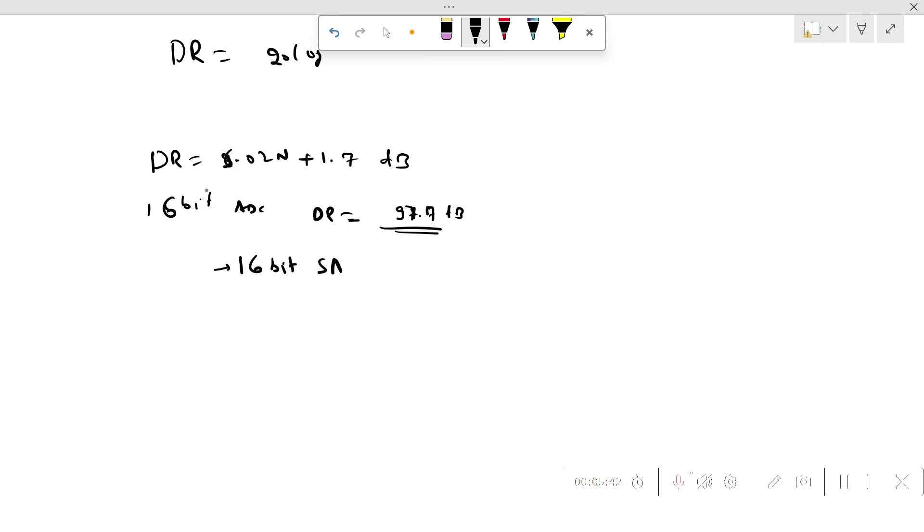If you consider a 16-bit SAR ADC of Analog Devices, which you can find in the data sheet on the internet—16-bit SAR ADC of Analog Devices, you can type AD7380—and if you check the DR of it, it is somewhere near 95 dB, which is 2 dB less than the ideal dynamic range of the ADC. What could be the reasons for this decrease in the dynamic range of the ADC? Let's go back to the basics of dynamic range.